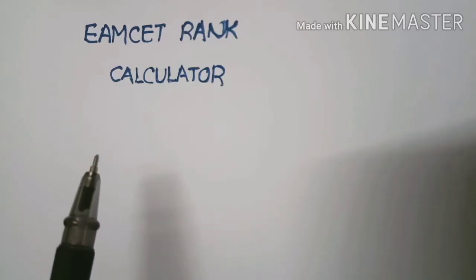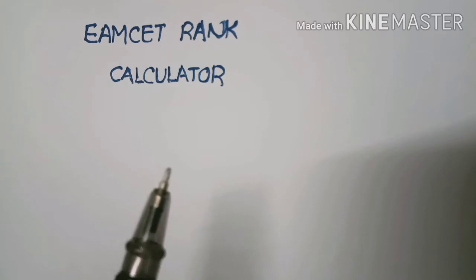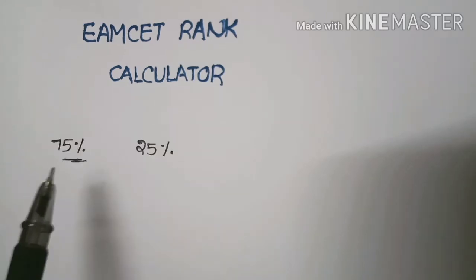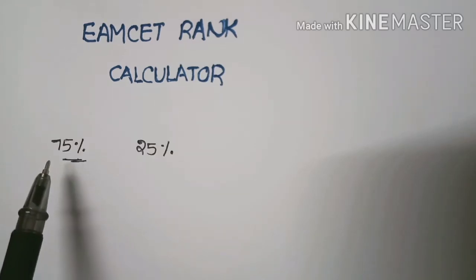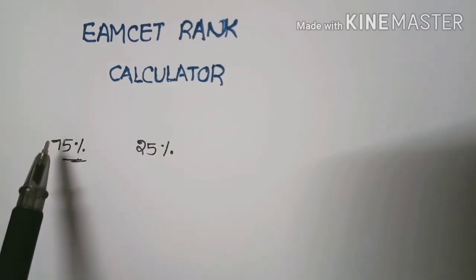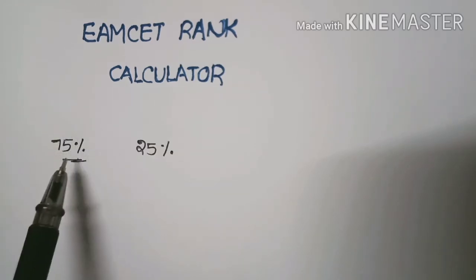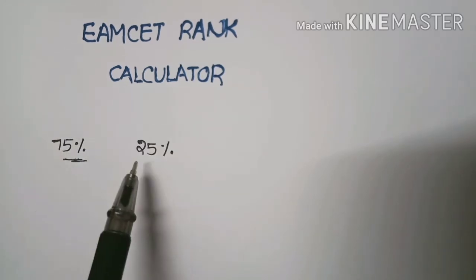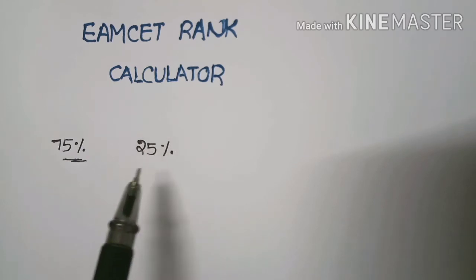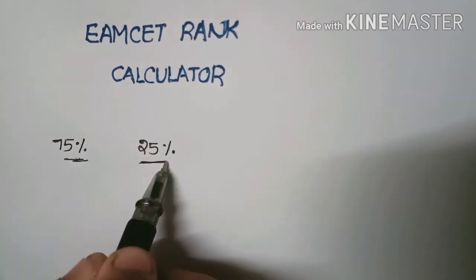In this video I explain how to calculate the MSET score. The MSET score is obtained by adding 75% of the MSET marks and 25% of the intermediate marks.